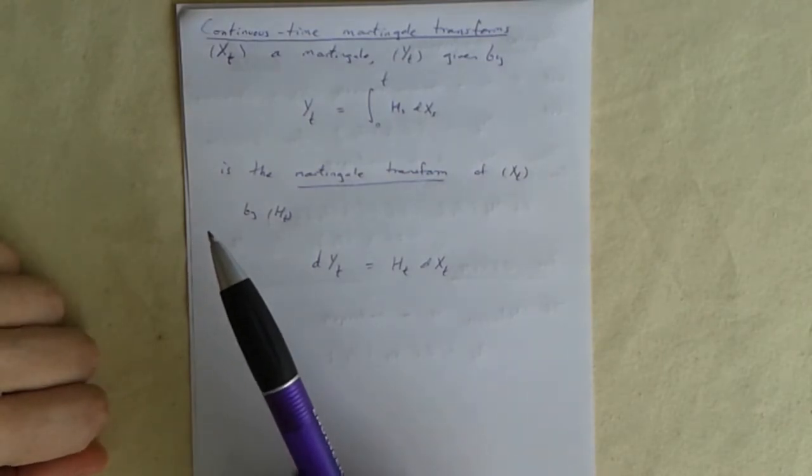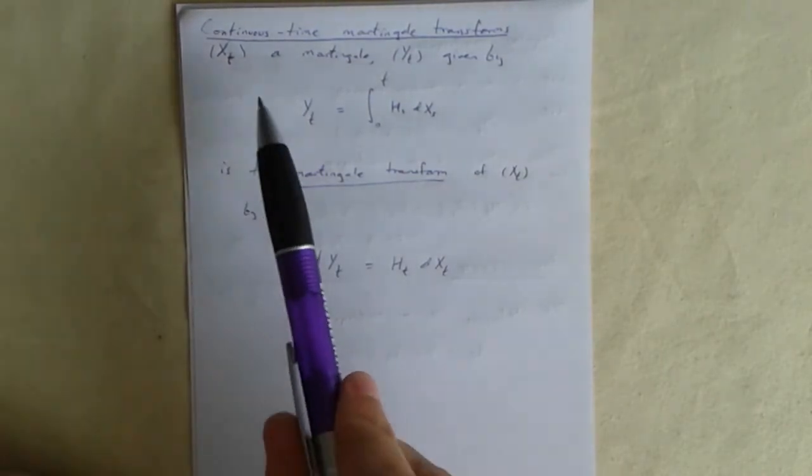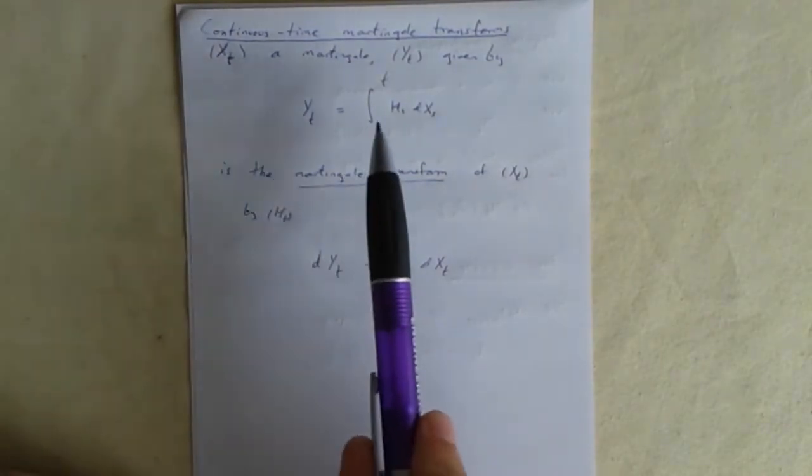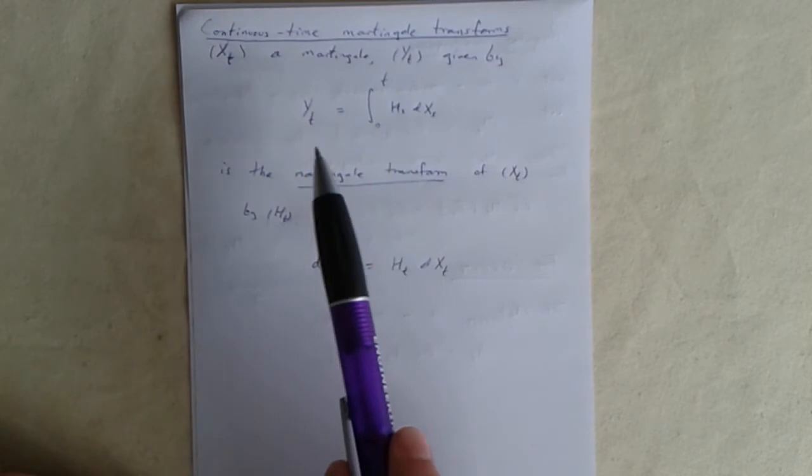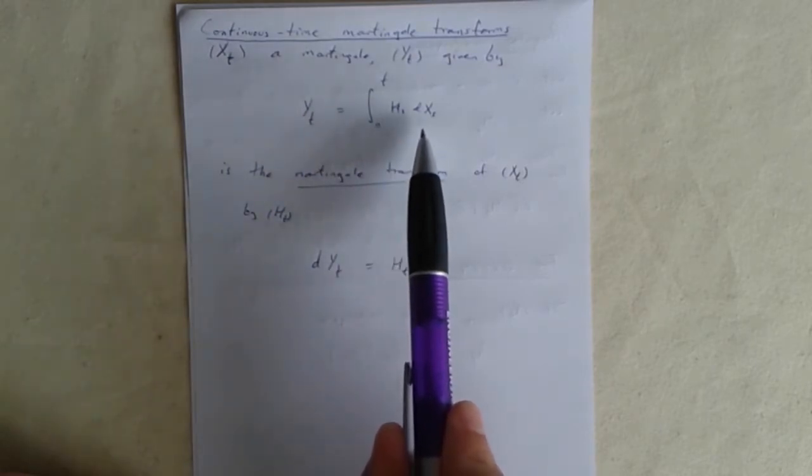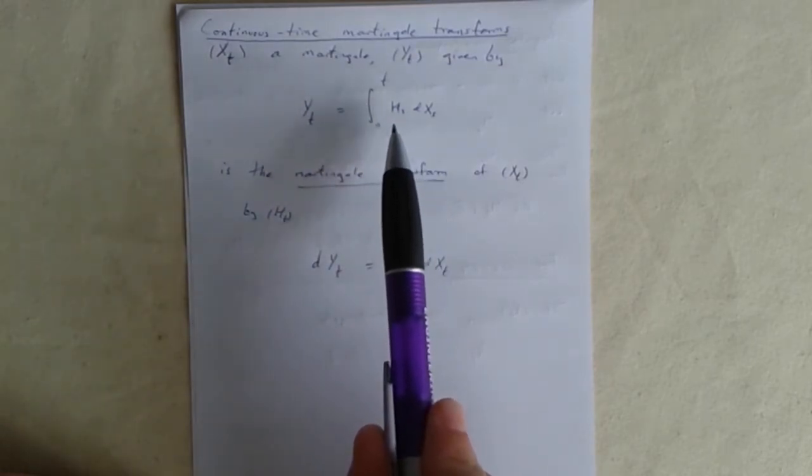We've considered these already. This is where you have a Martingale xt and you form a stochastic integral like this. So yt is the integral up as far as t of hdx, h being some other process.